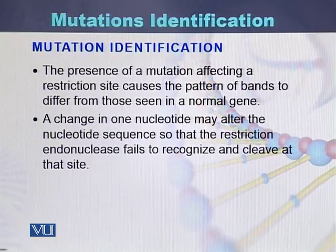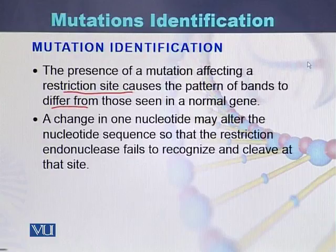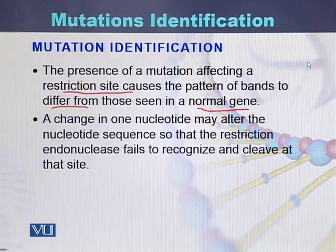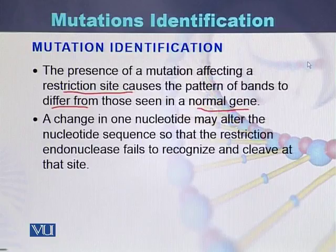The presence of a mutation affecting a restriction enzyme site causes the pattern of bands to differ from a normal gene. So if there is a mutation and due to that mutation the restriction enzyme site changes, we can identify — based on the change of restriction enzyme site — that there is a mutation, and due to that mutation the restriction enzyme will not digest the DNA.